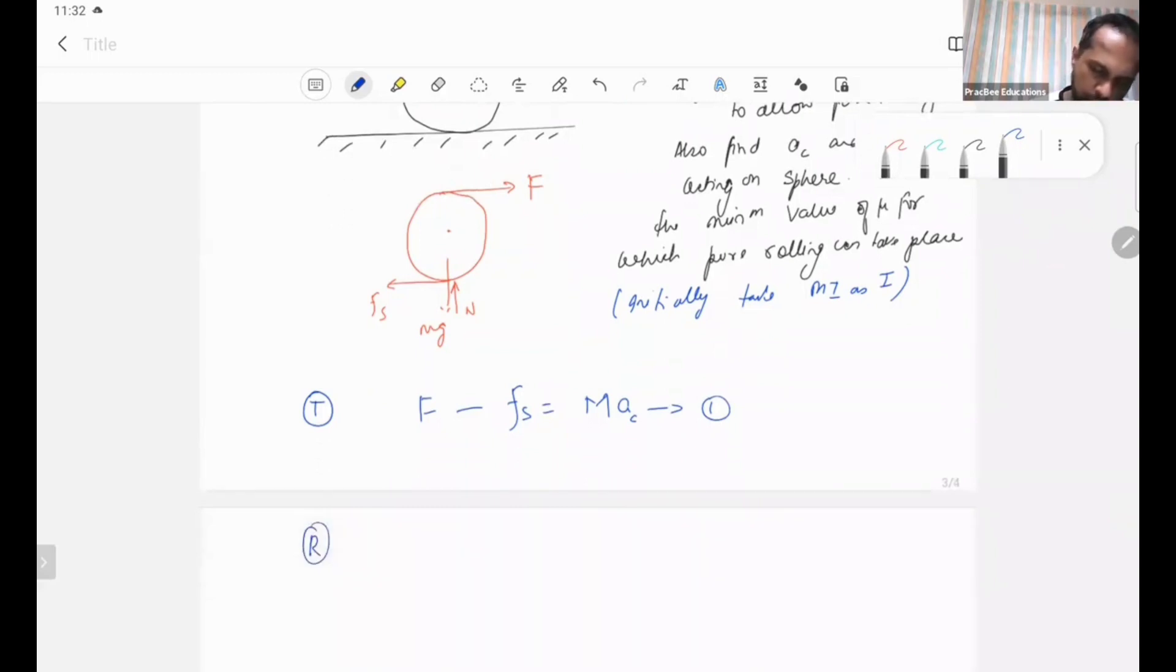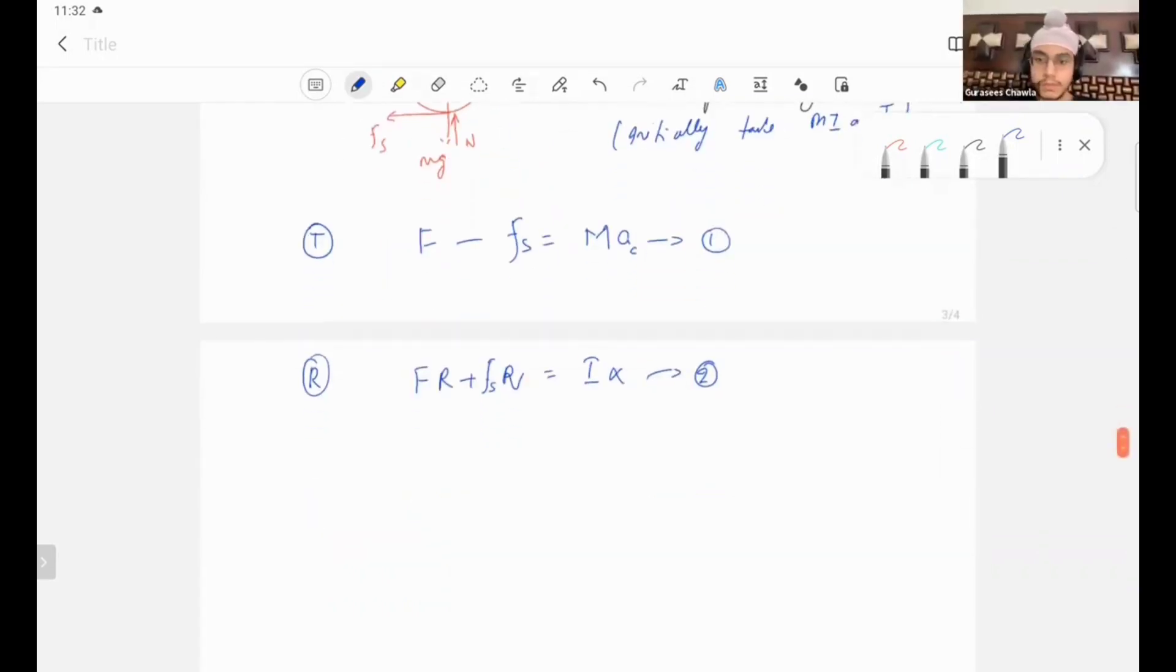Equation number 2 is rotational about the center of mass. This force will try to rotate it in this direction, this friction will try to rotate it in this direction. Both are rotating in the same direction. So this is FR plus Fs times R equals I times alpha. This is the second equation.